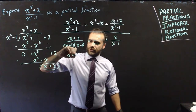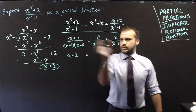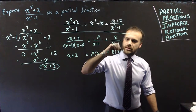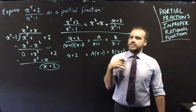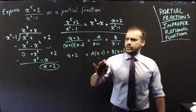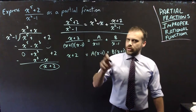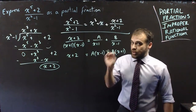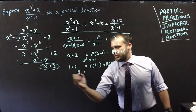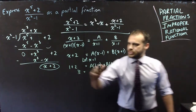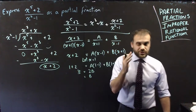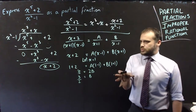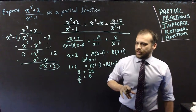We're going to do this quickly because you've done partial fractions before. x plus 2 is going to be equal to A times x minus 1 plus B times x plus 1. Now we need to substitute in. Let's sub in positive 1, because that gives us x minus 1 equals 0, eliminating A and giving us a value for B. Subbing in x equals 1, we get 3 on the left-hand side, this becomes 0, and we're left with 2B, which means B equals 3 over 2.